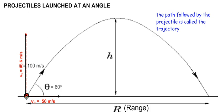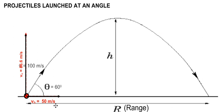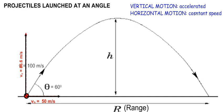Upon projection, the path followed by the projectile is parabolic. This path is called the trajectory. The maximum distance the projectile travels along the horizontal is called the range. While the projectile is in the air, the vertical and the horizontal motion are totally independent of each other, because they are perpendicular to each other.